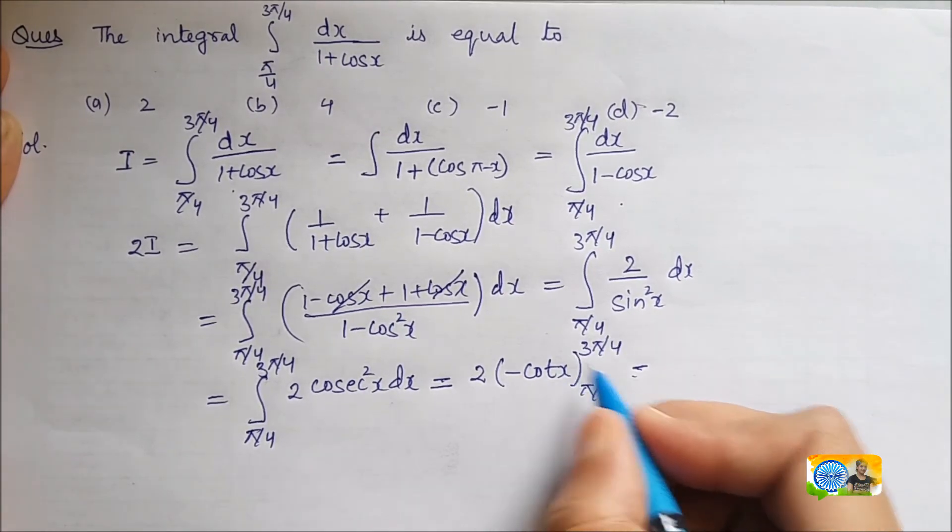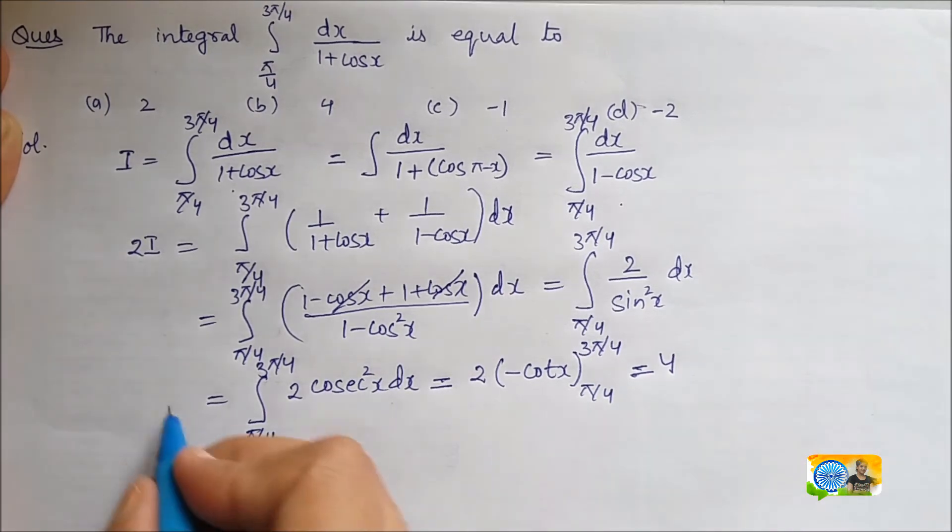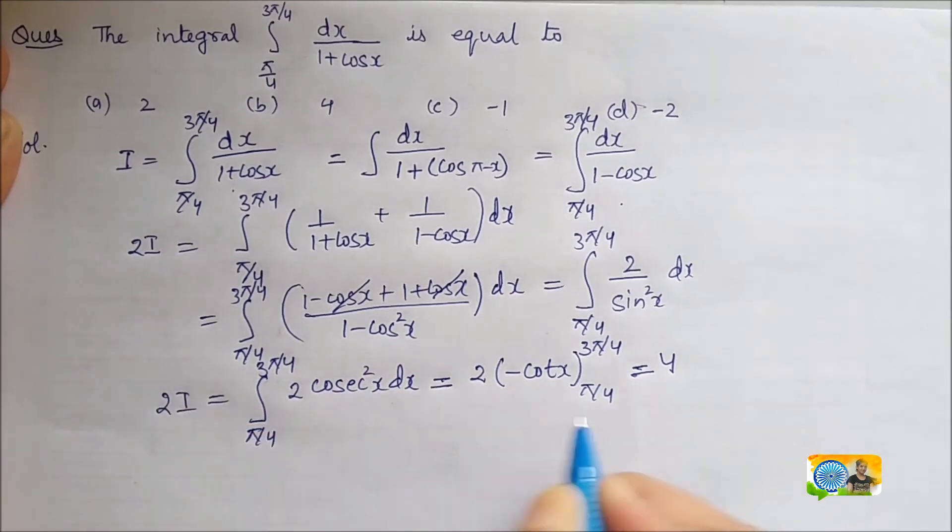This will give me 2 in the bracket. So, this will be equal to 4. This was 2I. So, 2I is equal to 4 and I will be equal to 2. So, answer for this question is option A that is 2.